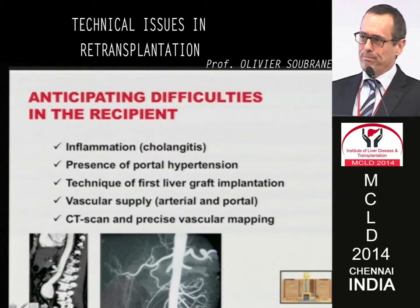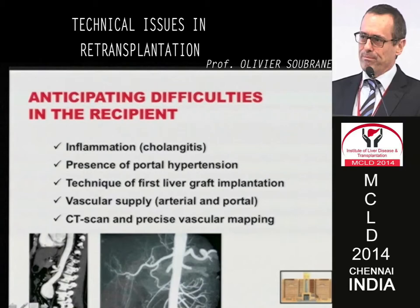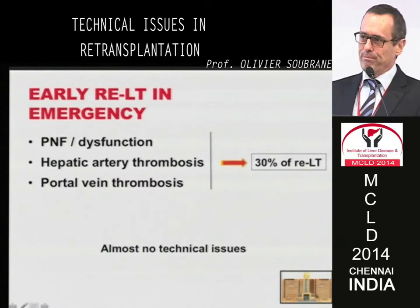Can we anticipate the difficulties in the recipient of a re-transplantation? In case of ischemic cholangitis or ischemic-type cholangitis, there will be some inflammation — sometimes very severe. Sometimes you have portal hypertension, which increases the risk of hemorrhage and the difficulty of dissection. The technique of the first liver graft implantation is also important to consider. Before beginning a re-transplantation, you must read again the former operative procedure. You must study the vascular supply very precisely in these circumstances and have a precise vascular mapping, especially in patients with thrombosed vessels and thrombosed artery.